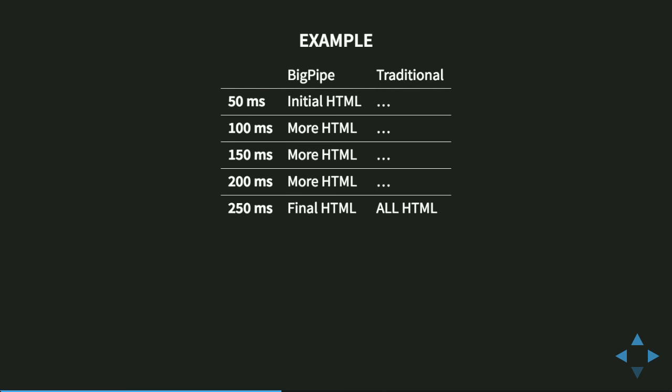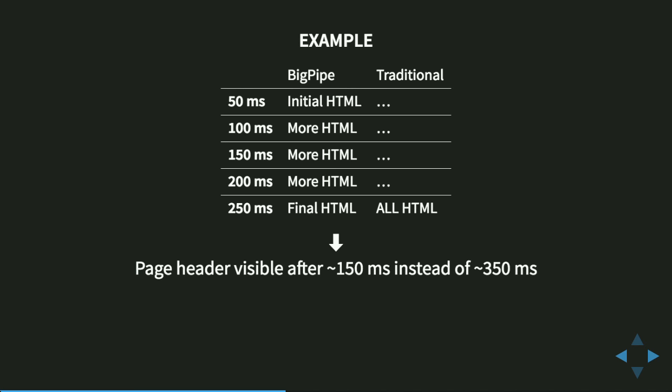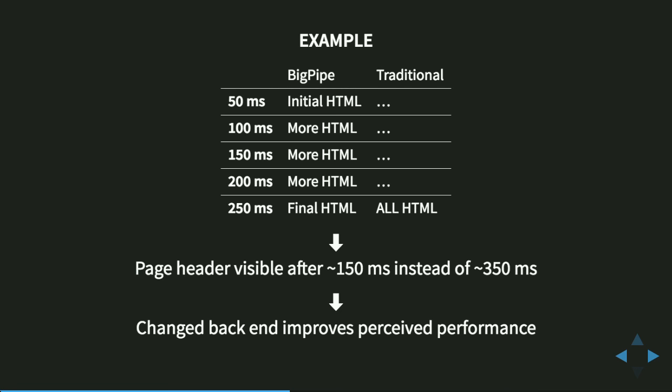A concrete example: BigPipe versus the traditional page loading model. Traditional only doesn't send anything until the very end — calculating, calculating, calculating, then sends everything. BigPipe, on the other hand, starts sending initial HTML so that assets can start to be fetched, then sends another chunk, another chunk until complete. It takes the same total amount of time but delivers it in a far more efficient way. Concretely, your page header with the menus, title, and logo is visible very fast — 150 milliseconds to the screen instead of 350 or more. Changing the back-end can improve perceived performance.